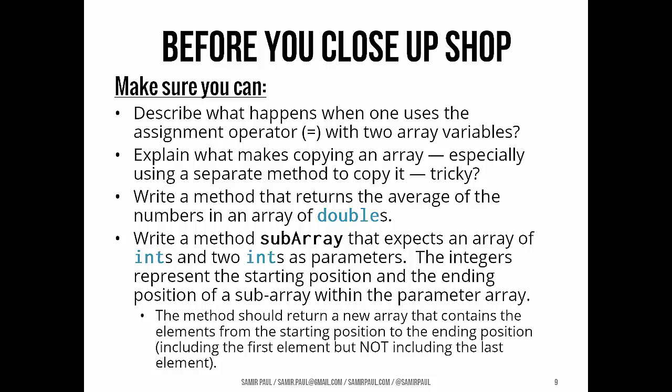Before you close up shop, I would recommend one thing before continuing. Make sure you can write a method that takes an array as a parameter, an array of ints, and as a second parameter takes an int value that you want to search for, and it finds the index where that search value exists and returns it, or negative 1 if it's not present in the array. Make sure you can do that. It should be real quick. After that, take a look at these questions. Make sure you're clear on what happens when you use the assignment operator with two array variables. Explain what makes copying an array tricky, especially if you're using another method. Write a method that returns the average of a bunch of numbers in a double array. And take a look at this last method specification and tackle it if you would be so kind.